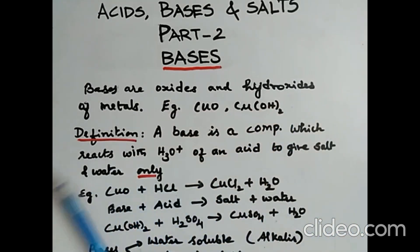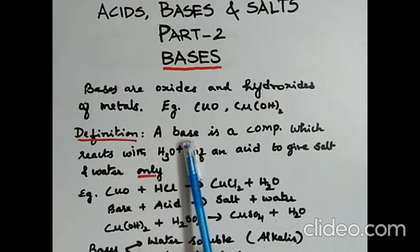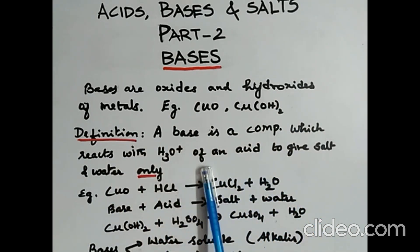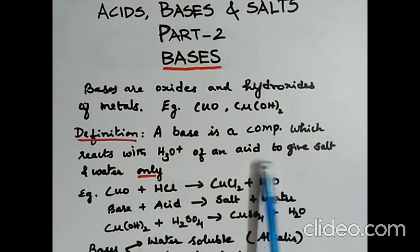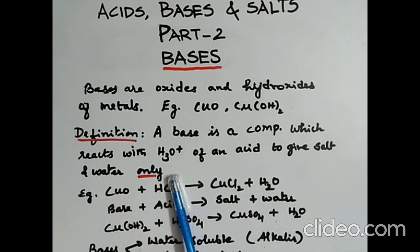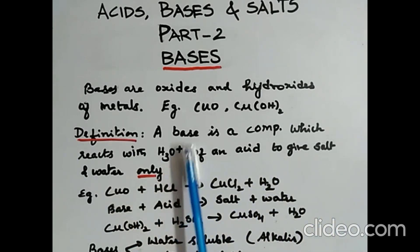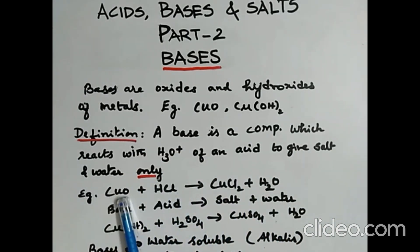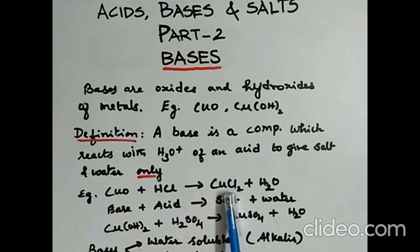Now how to define a base? A base is a compound which reacts with hydronium ion of an acid to give salt and water only. 'Only' has to be mentioned here because when a base combines with an acid, it gives only two products, that is salt and water. Example: copper 2 oxide, when it combines with hydrochloric acid, gives copper 2 chloride plus water.